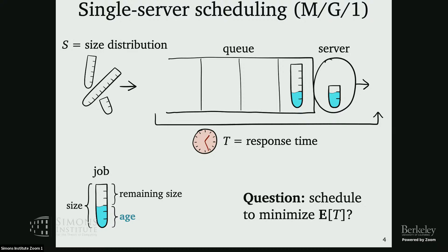In the setting where I can see each job's size, age, and remaining size — with perfect information — the classically known answer is shortest remaining processing time (SRPT): always serve whichever job has the least remaining size. The intuition is that whenever you can get off your plate the quickest, you should work on that, reducing the average number of jobs waiting.